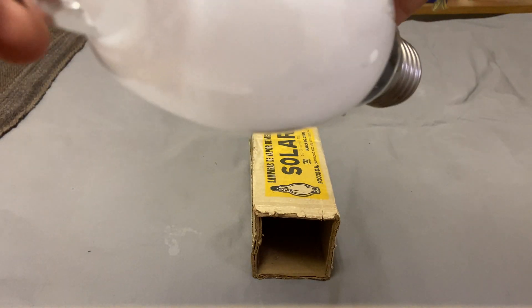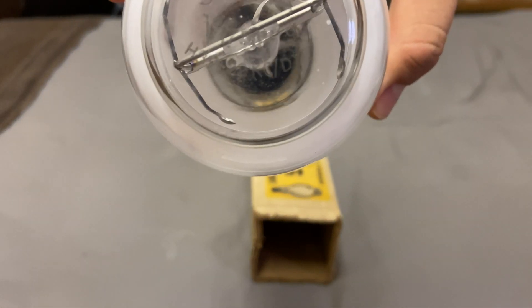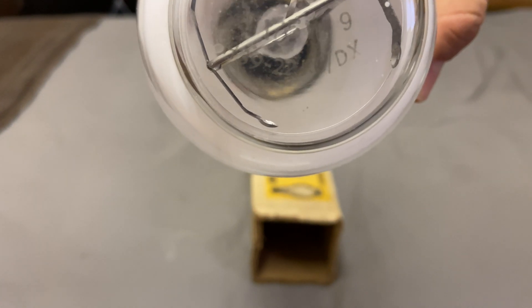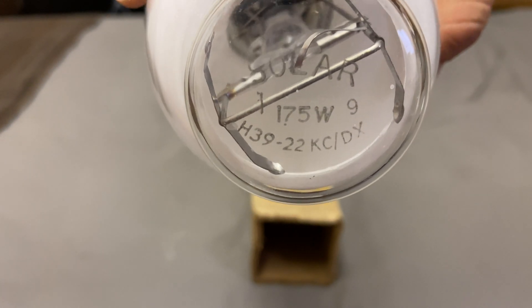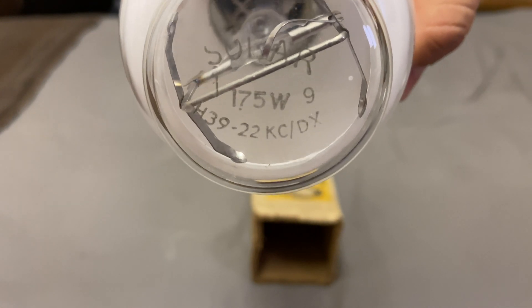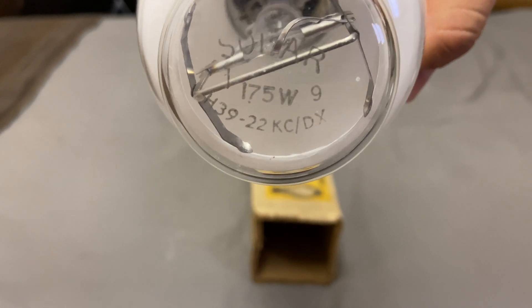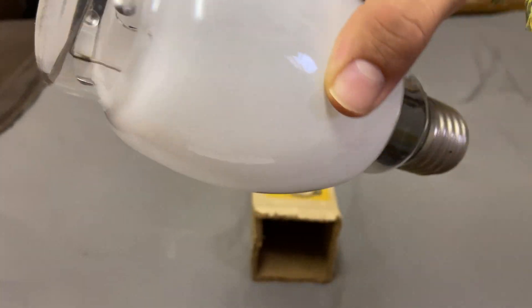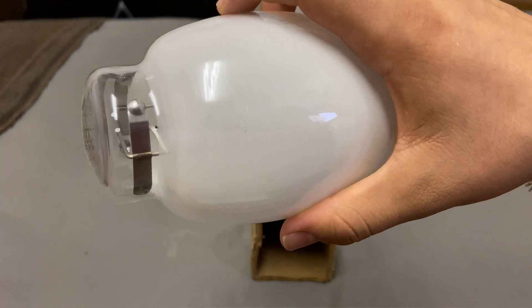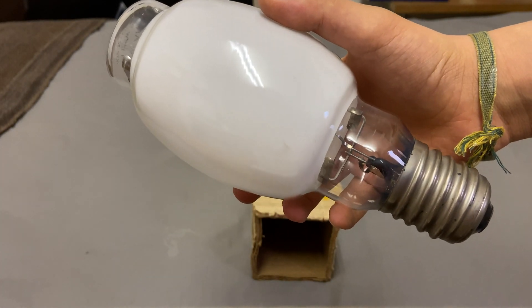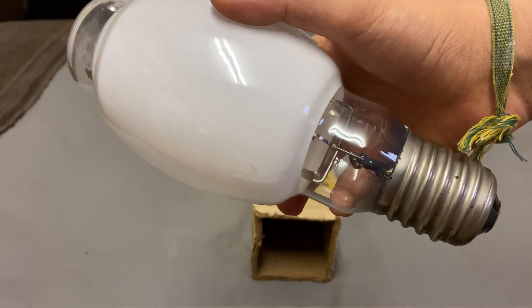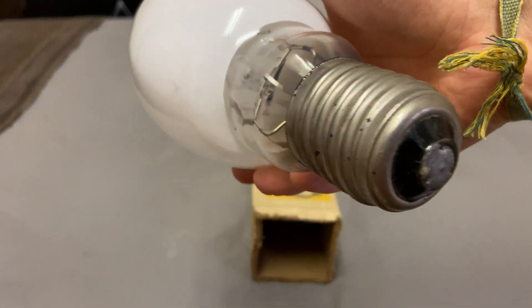And here you can see the markings: Solar 175, H39 the ballast, slash 22 - I don't know what that means, if you know please tell me below. HC, also I don't know what that means. But the slash DX I think is the deluxe white phosphor. So I assume this bulb was made around 1985, perhaps 1985 to 1988.